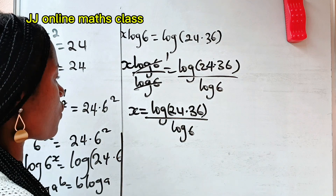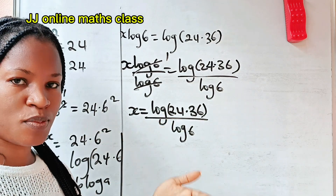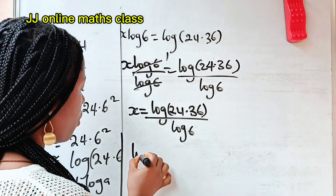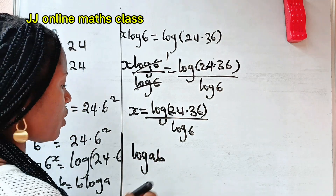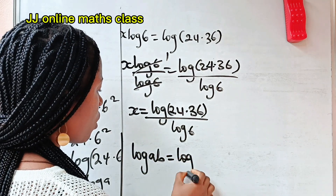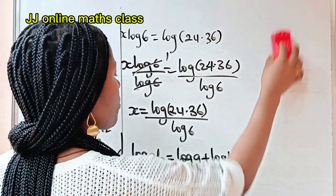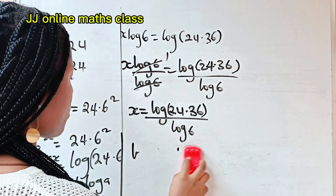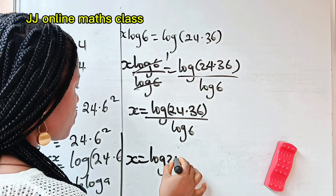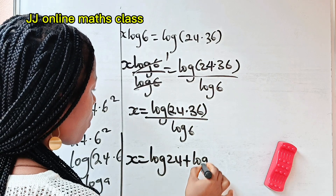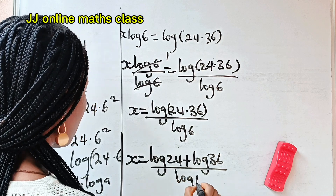Now, we are doing this without a calculator, so we are going to simplify as much as possible. Recall that log of a times b is equal to log a plus log b. So that means we can write this as x is equal to log 24 plus log 36, divided by log 6.